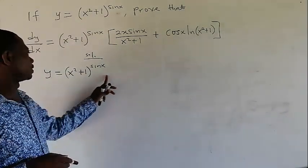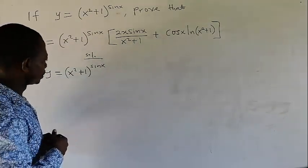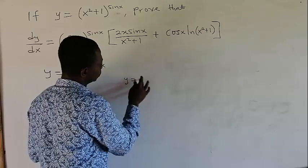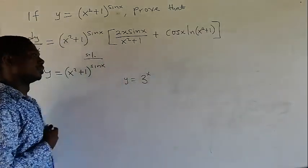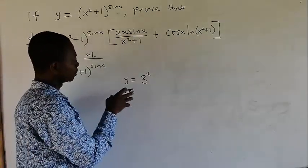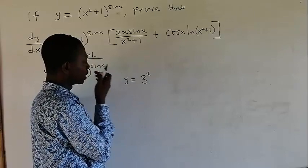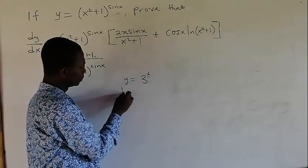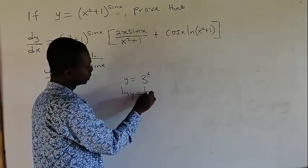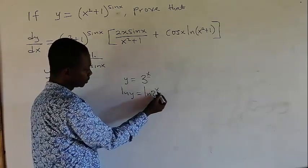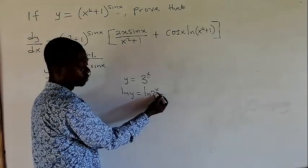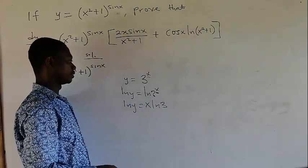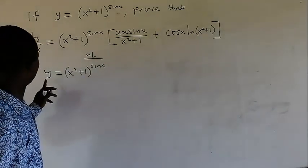Now we are going to find the derivative of this. Before that, in case we are given, let's say, y equals 3 to the power x — so to find the derivative of this one, we have to first move this power. And before we can move it, we have to take the natural log of both sides. So if we take the natural log of both sides, we get ln y equals x times ln 3. This is a power rule, so this can be written as 1 times x.